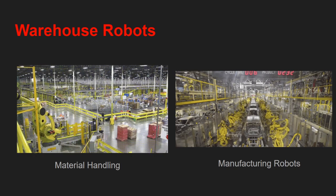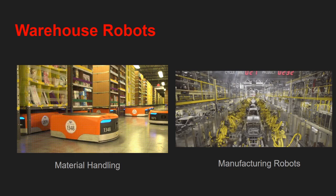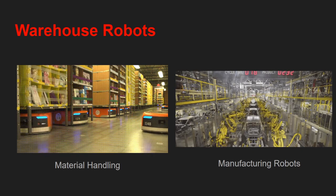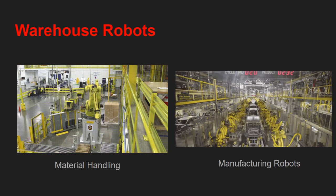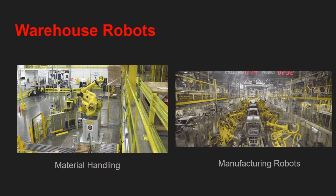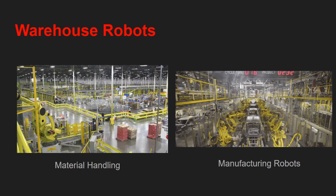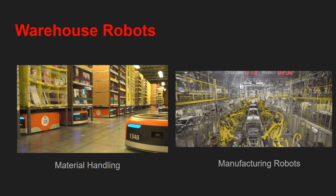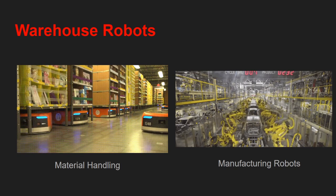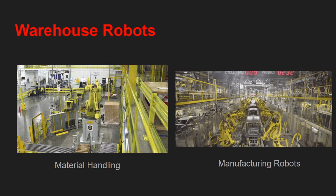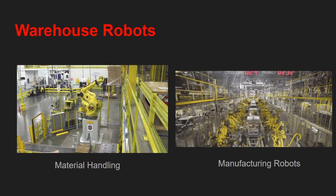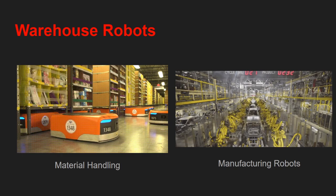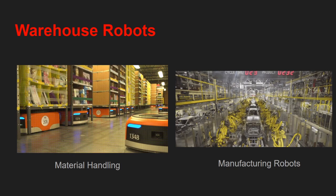On the right you can see an assembly line for the automobile industry where hundreds of manipulators or robotic arms manufacture cars automatically with little or no human intervention. These kinds of robots entered the market several decades ago and have improved the productivity of assembly lines and manufacturing facilities by ten to a hundred times.